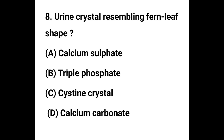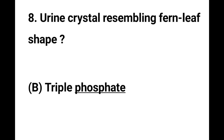Question number 8. Urine crystal resembling fern leaf shape: Option A - Calcium sulfate, Option B - Triple phosphate, Option C - Cysteine crystal, Option D - Calcium carbonate. The correct answer is Option B, Triple phosphate.